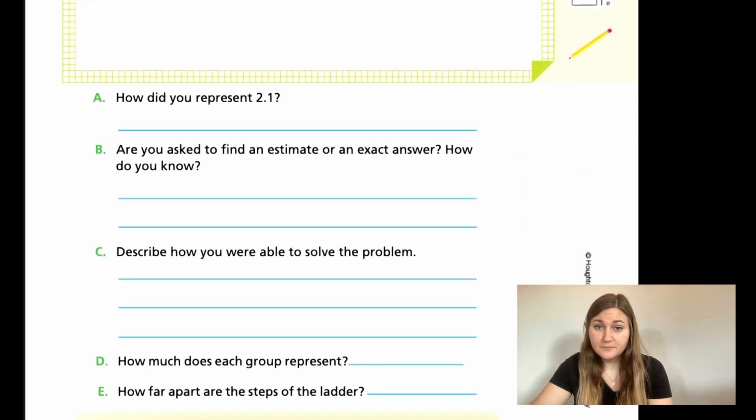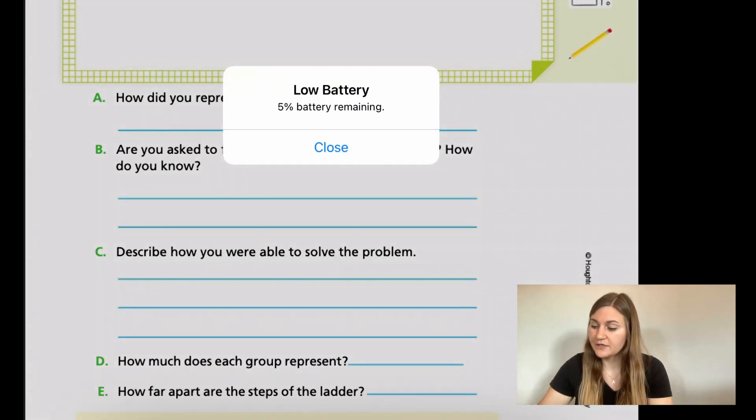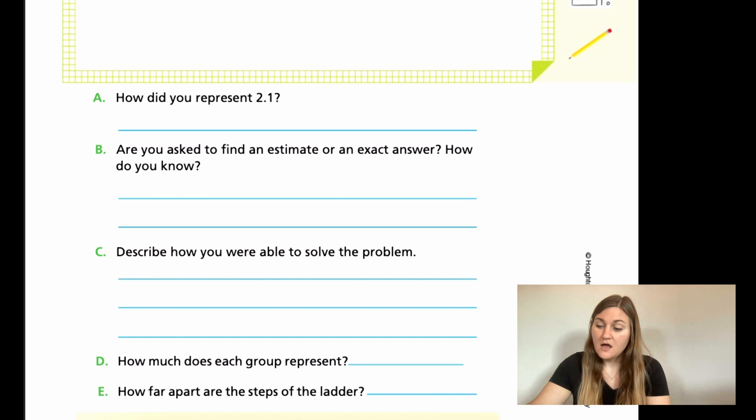For C, describe how you were able to solve the problem. So just tell me what you did to solve that problem. For D, how much does each group get? And then E, what's your final answer? How far apart are the steps on the ladder? So for number one, I'm just going to have you draw the picture. And then for A, B, C, and D, go ahead and answer those questions. Go ahead and try your best on these problems. And then we will come back and solve these together. Go ahead and hit pause here.